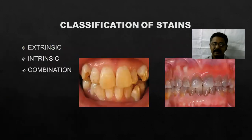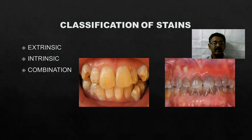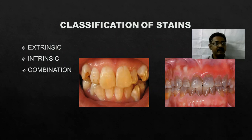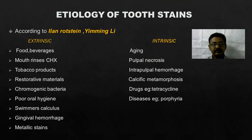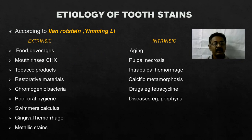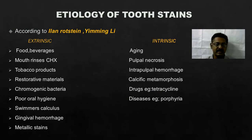There are different reasons for tooth discoloration. We can basically divide that into extrinsic tooth discoloration, intrinsic tooth discoloration, and combination. So what are the things that come under extrinsic tooth discoloration and what are the intrinsic sources of tooth discoloration?